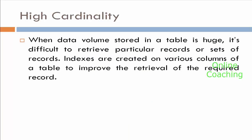What is high cardinality? When a data volume stored in a table is huge, it is difficult to retrieve a particular record or set of records. Indexes are created on various columns of a table to improve retrieval performance. For example, I have a dimension table which has huge data — it has millions of records. I want to read record number 100. It is very difficult out of millions of records to read one particular record, so we need to create an index.